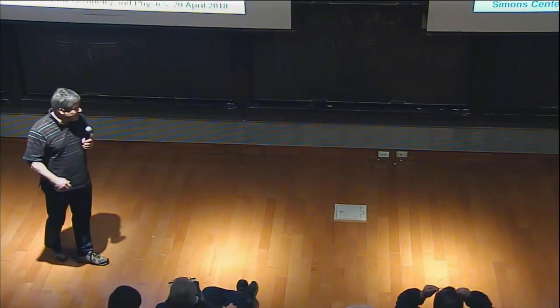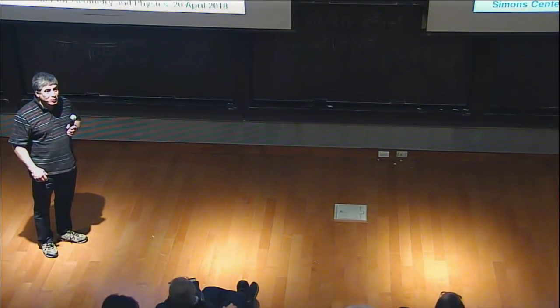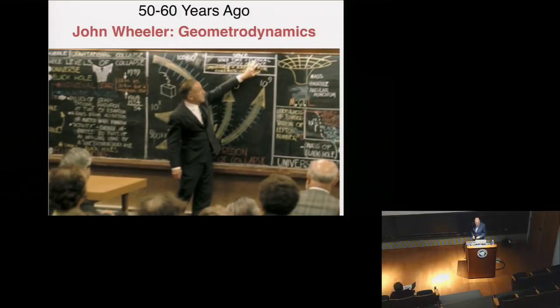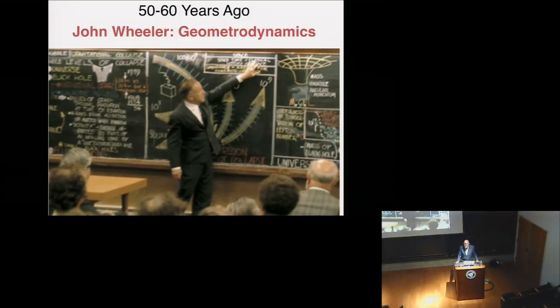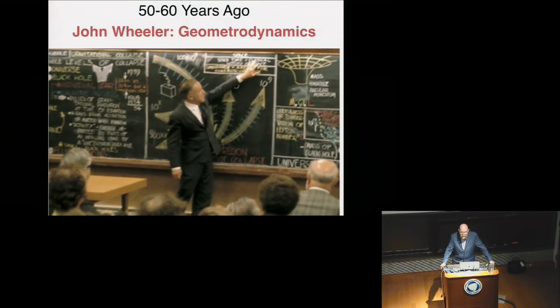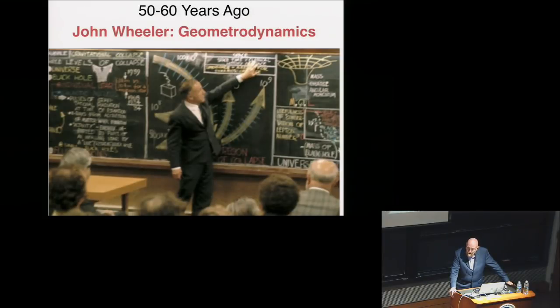When I was John Wheeler's graduate student in the early 1960s, and when Charlie Misner was his graduate student in the early to mid 1950s, John was pushing the idea that one of the most important things we could probe in our research is the nonlinear dynamics of curved spacetime.